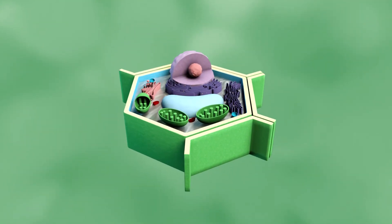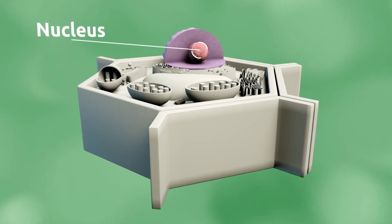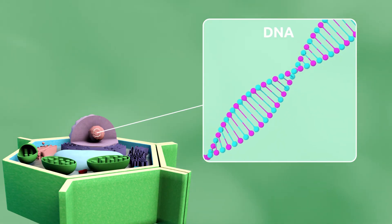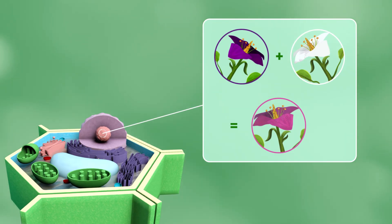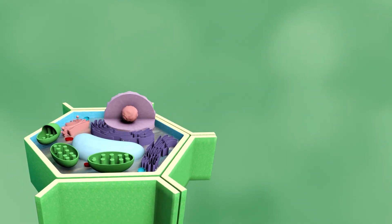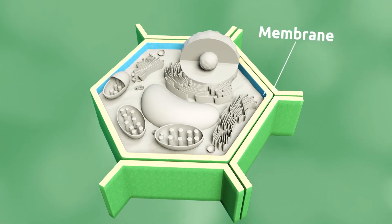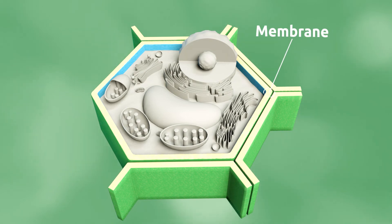A plant cell is a eukaryotic cell. The nucleus is in charge of all cell functions. DNA is stored in the nucleus and is made up by genes which hold genetic information. When plants reproduce, the genetic material will pass on to the new plant, so new plants will have the same characteristics. The membrane is a layer that surrounds and protects the cell from the outside environment, and its main function is to allow food in and release waste substances.